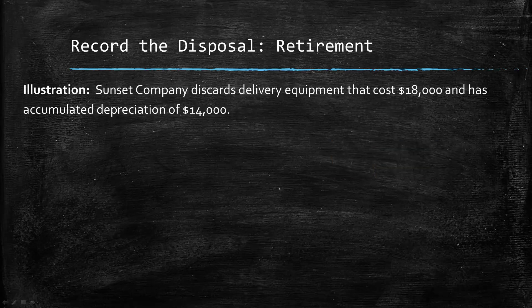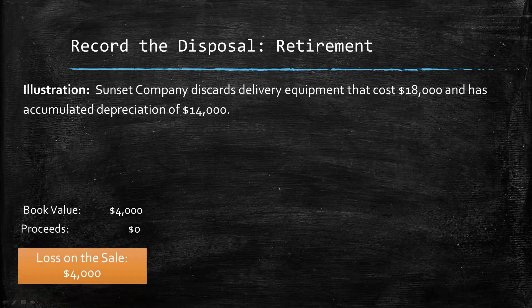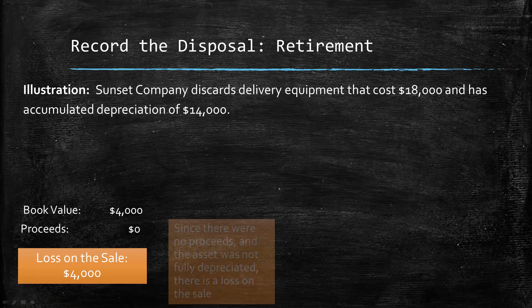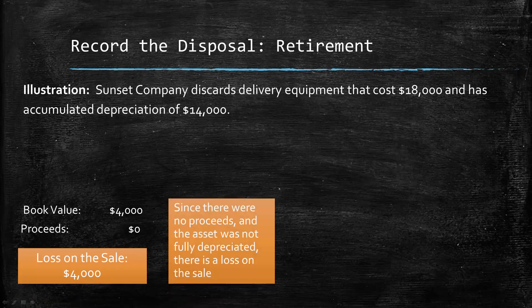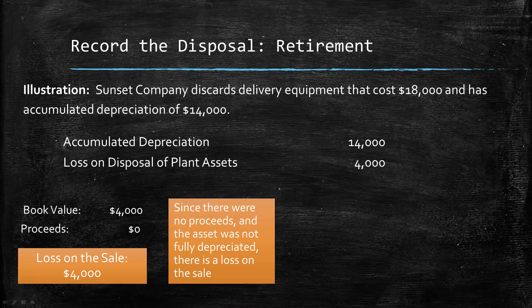Now let's look at a retirement example. Sunset Company discards delivery equipment that cost $18,000 and has accumulated depreciation of $14,000. The book value here is $4,000. Since they discarded it, they have zero proceeds and are not receiving any cash on this asset. So we end up with a $4,000 loss. The journal entry is to debit accumulated depreciation, debit the loss because it's an expense, and credit the equipment to remove it from our books.